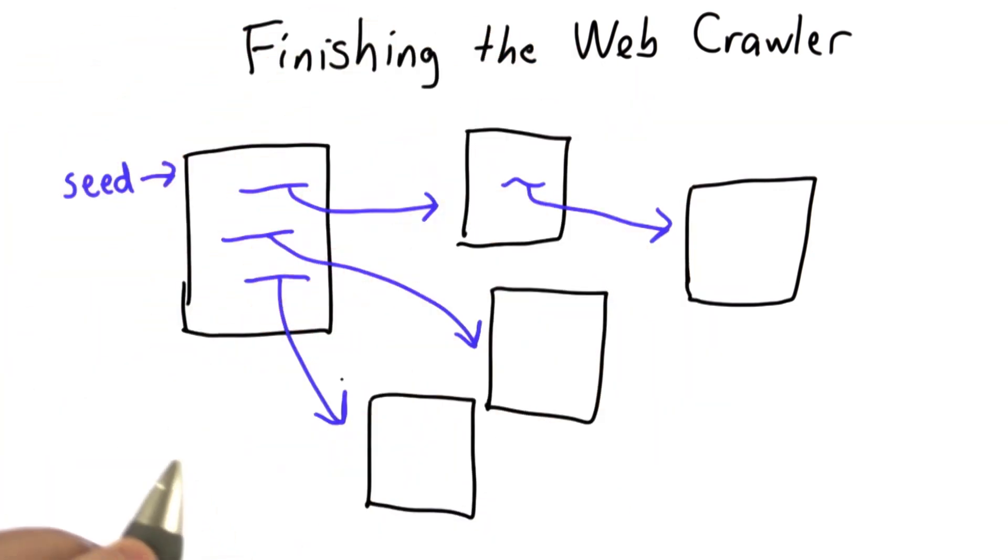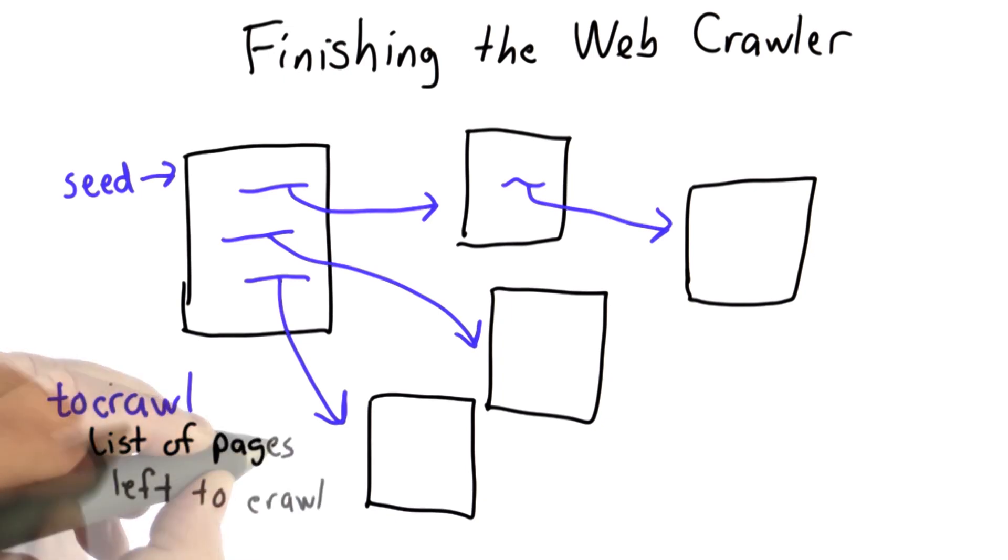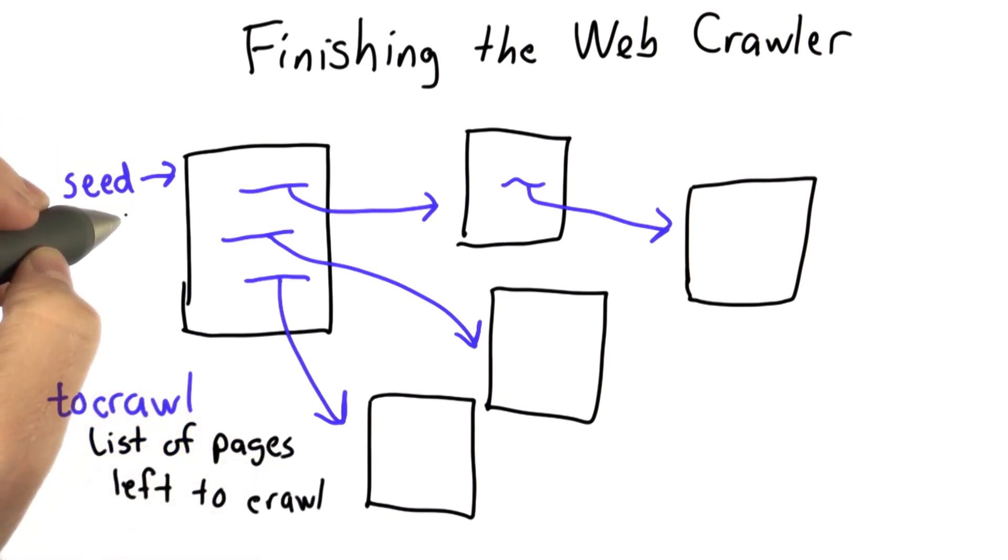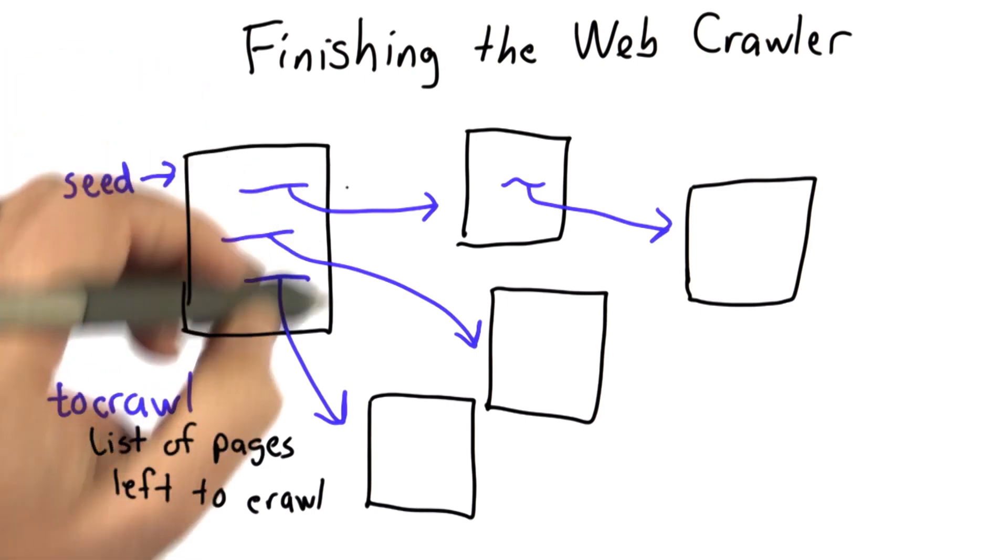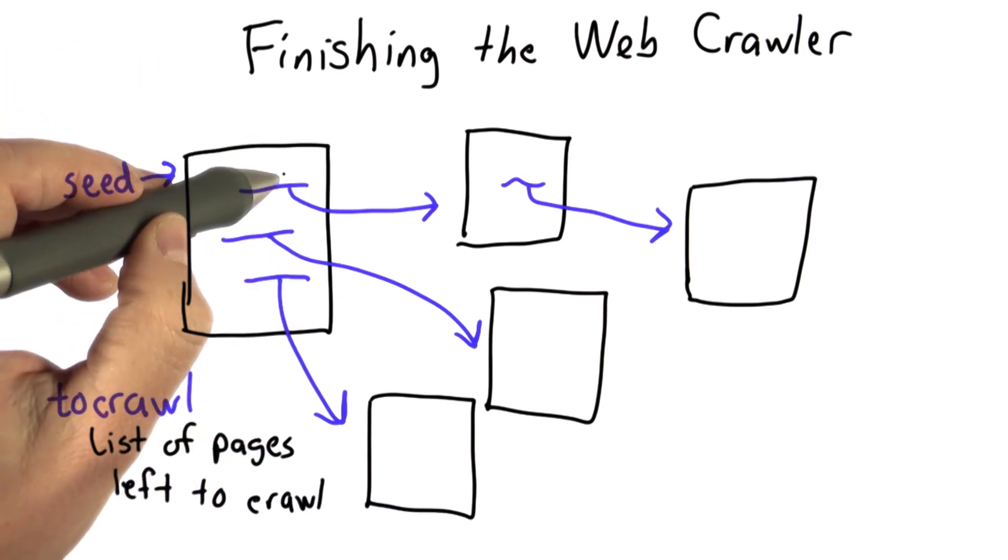We need to keep track of all the pages that we're waiting to crawl. And we'll introduce a variable to crawl to do that. And what to crawl will be is a list of pages left to crawl. So initially, it'll just be the seed page. Once we collect the links on the seed page, well, it will include those links as well.